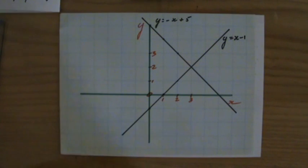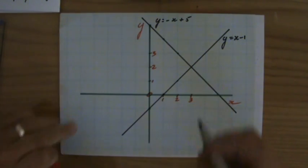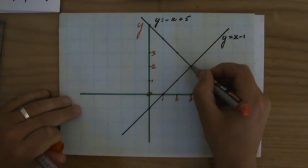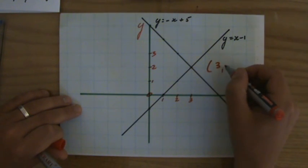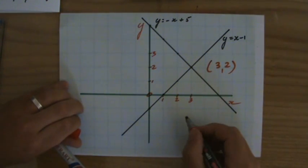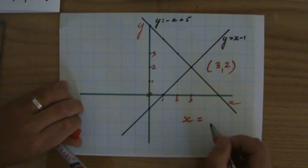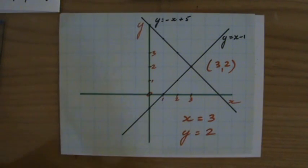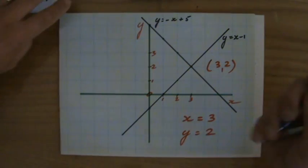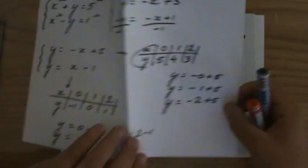So for which x and for which y are they both the same? That's their point of intersection. What is the coordinate there? That is at (3,2). Do you see that? So the answer to these simultaneous equations is x = 3 and y = 2.